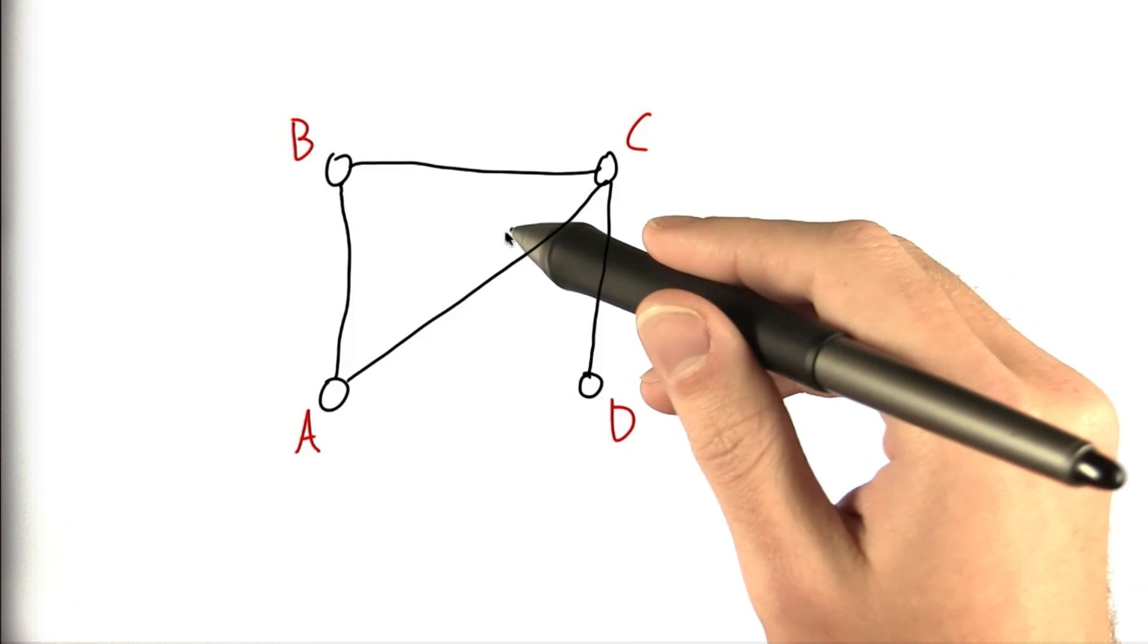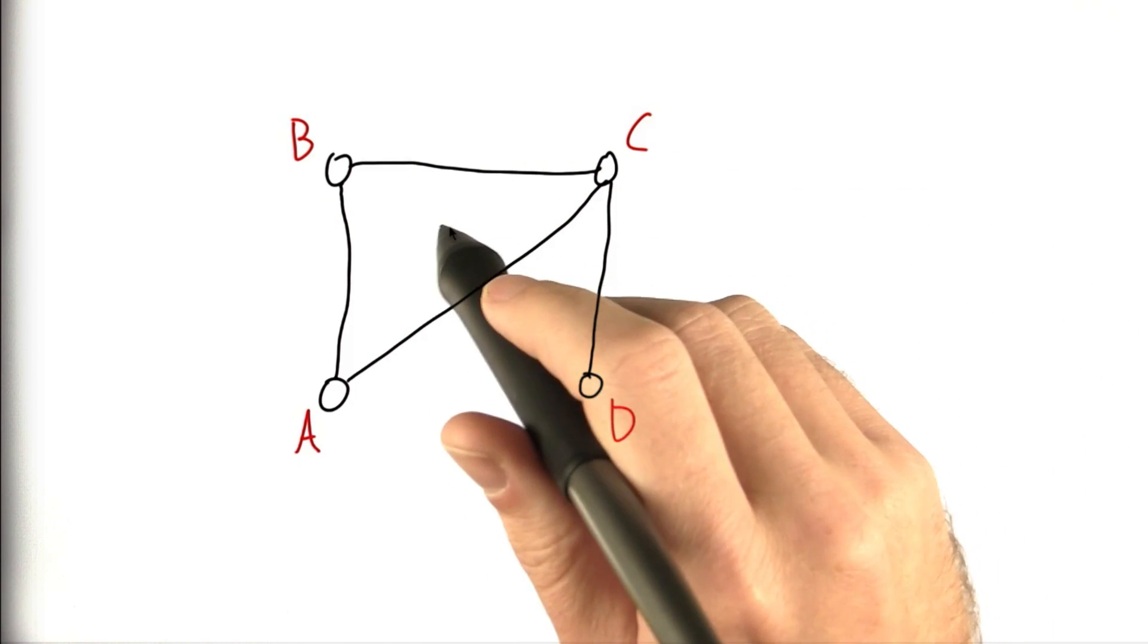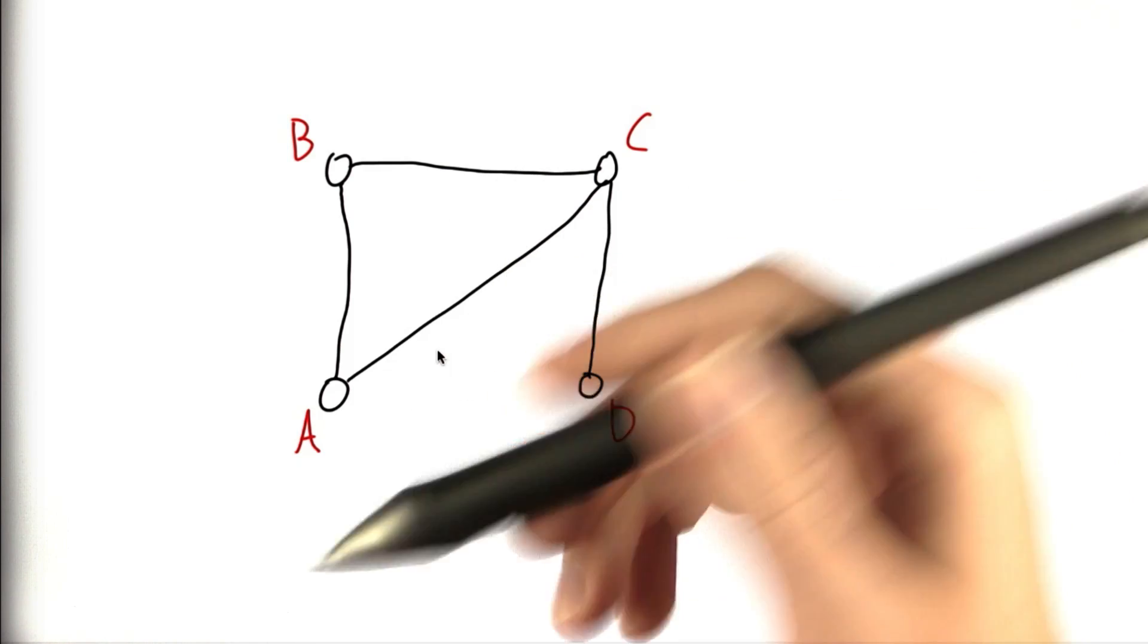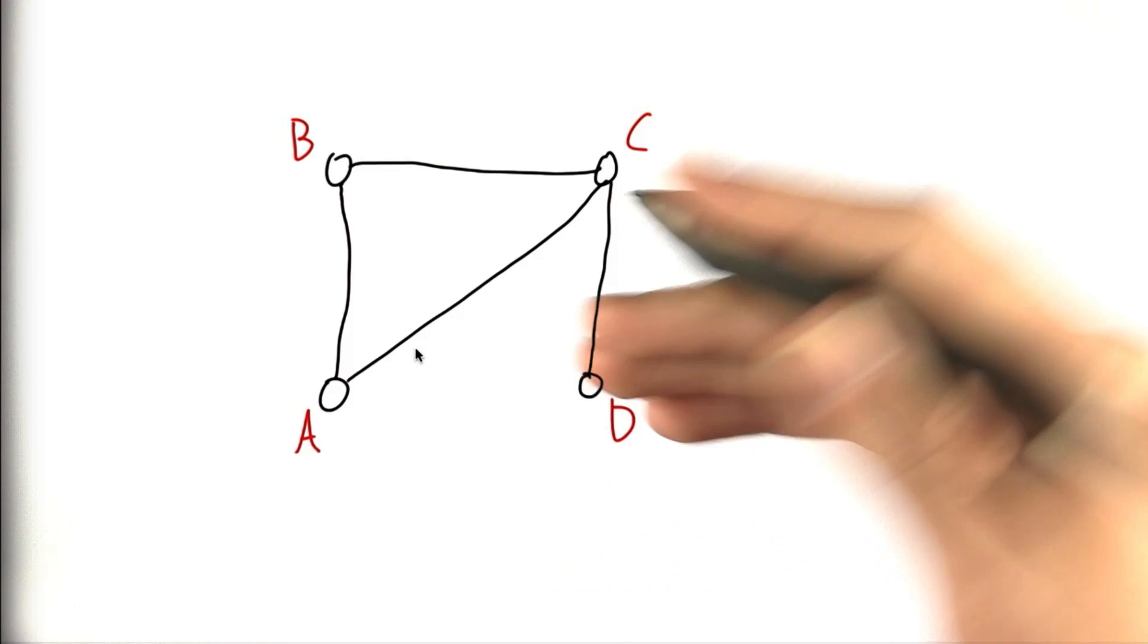What you want to do and how you want to represent them really depends on the specific problem you're talking about. But let's take a look at a fairly simple way of representing a graph, and that's called an adjacency matrix.